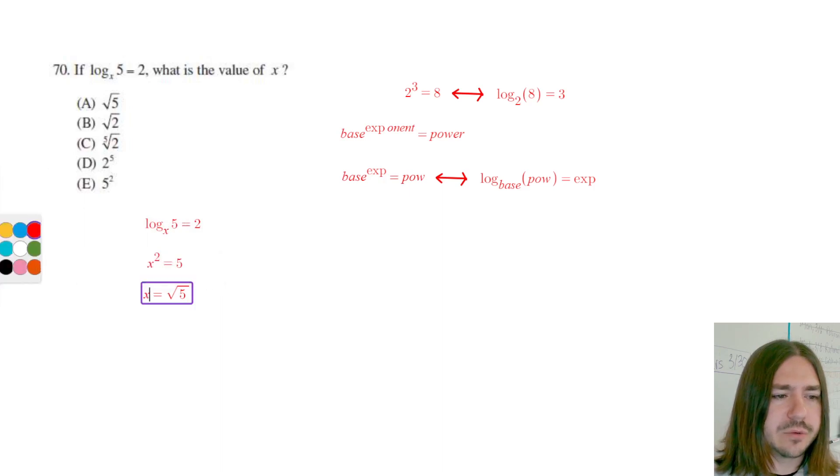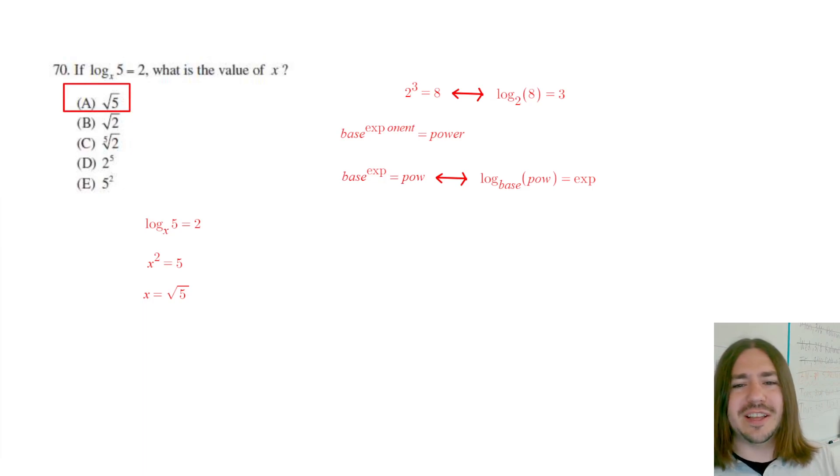So yeah, x equals root 5, and that's our answer for number 70. Thanks for watching, and y'all have a great day.